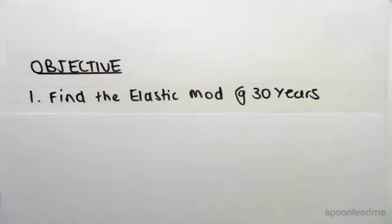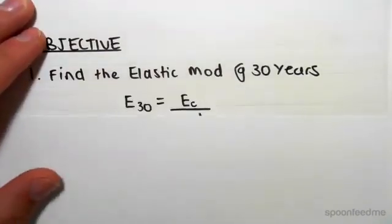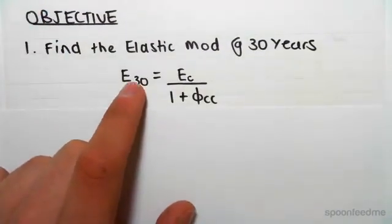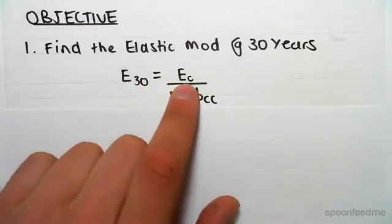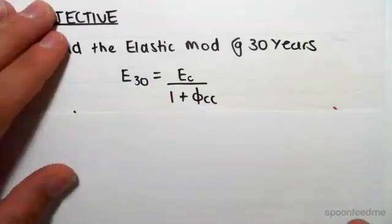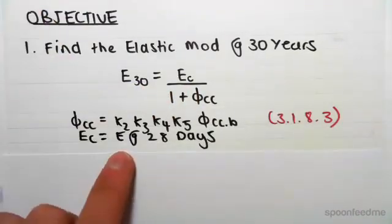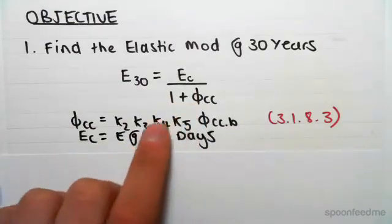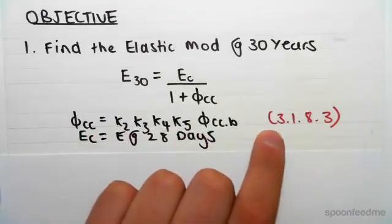We're going to be using this formula here: E subscript 30, the elastic modulus at 30 years, equals Ec, which is the elastic modulus at 28 days, divided by 1 plus φcc.